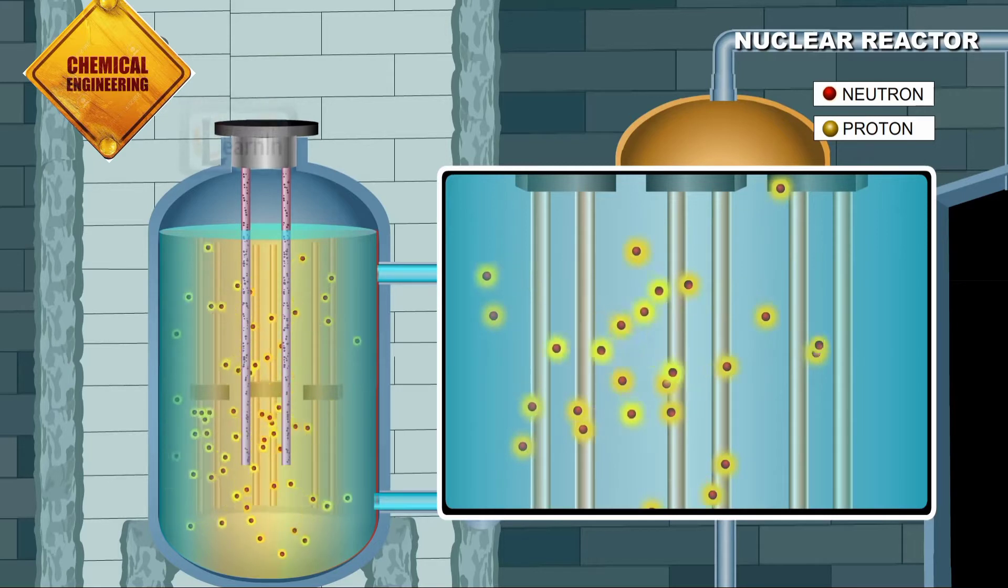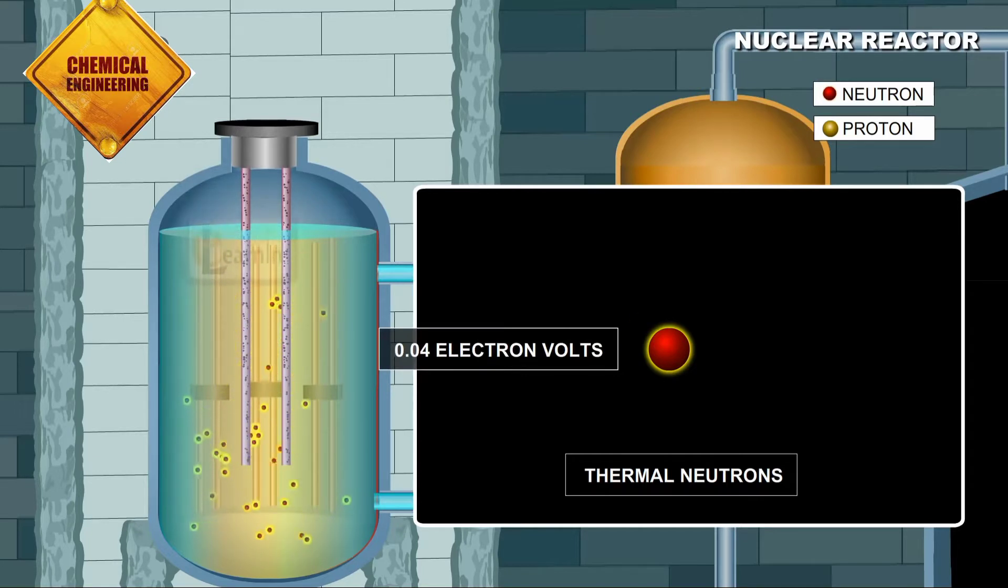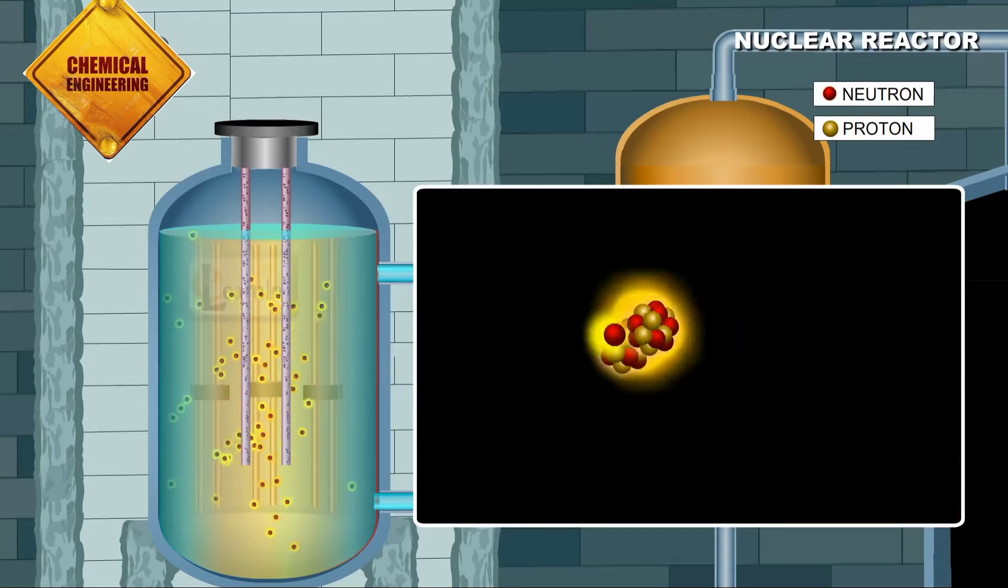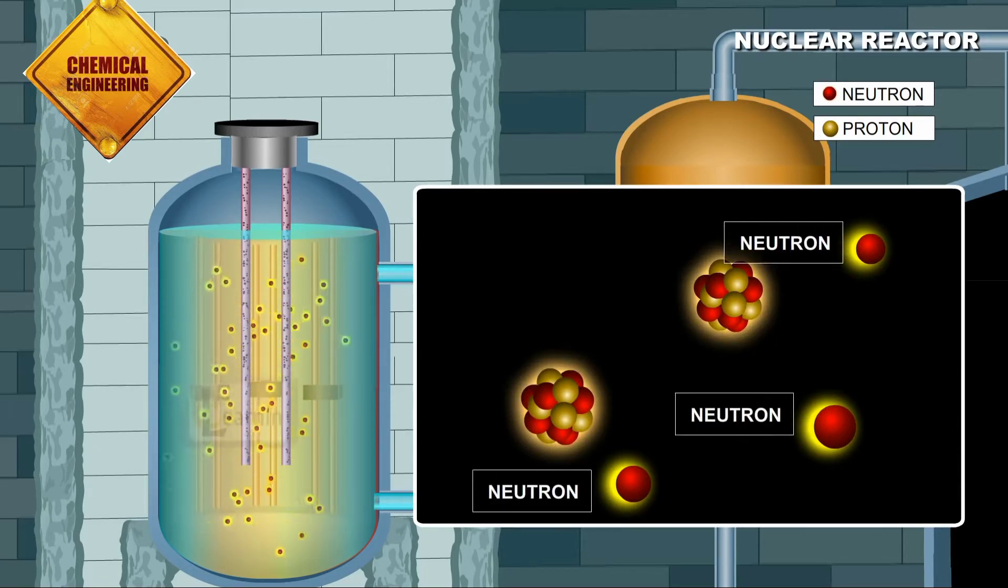Thermal neutrons, which are the neutrons with energy of about 0.04 electron volts, are capable of producing fission reaction with uranium-235. During the fission reaction process, new neutrons are given out which have energies of about 1 MeV, this is 1 mega electron volts.